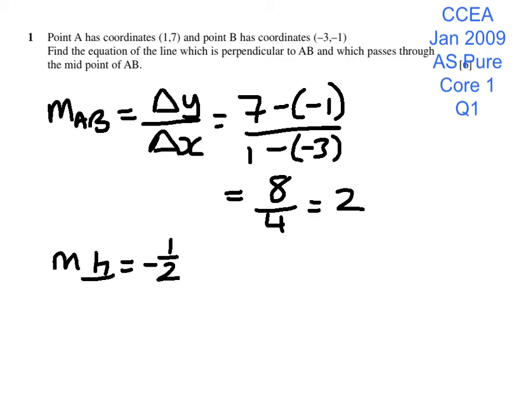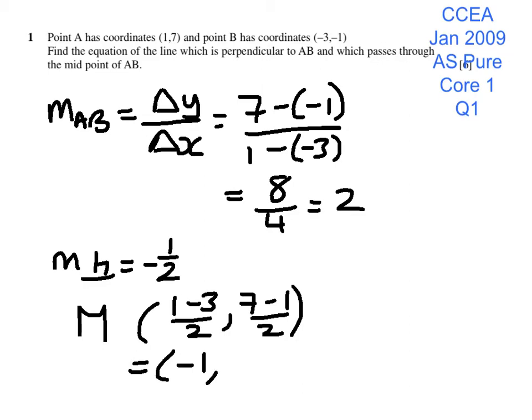And we also need to know the midpoint of AB. So the midpoint will be the sum of the X's divided by 2, sum of the Y's divided by 2. So my midpoint is at minus 2 divided by 2, minus 1, 6 divided by 2, which is 3.